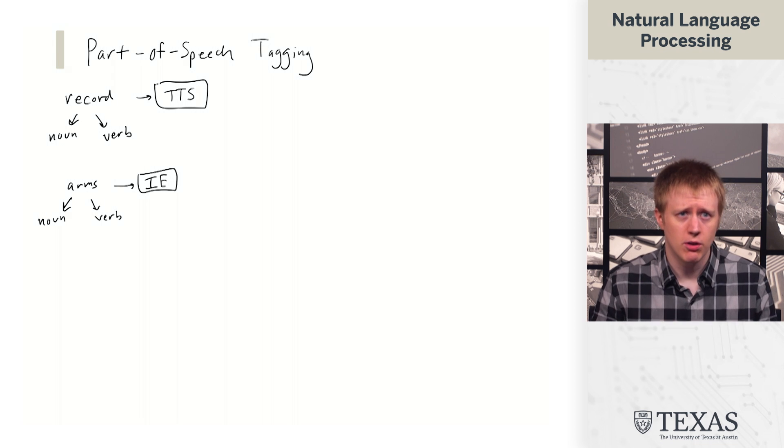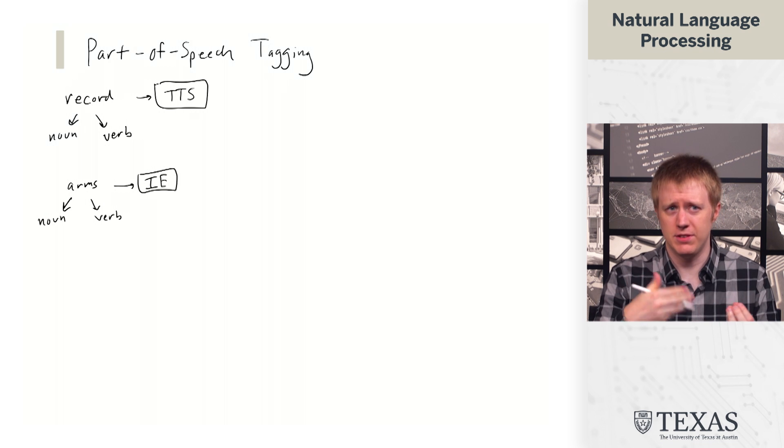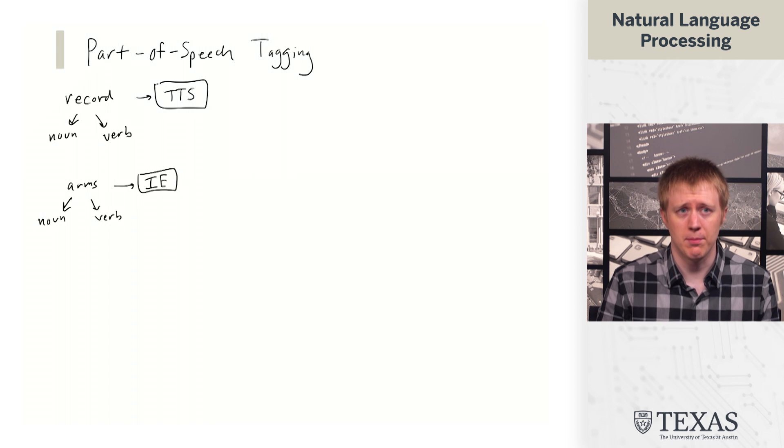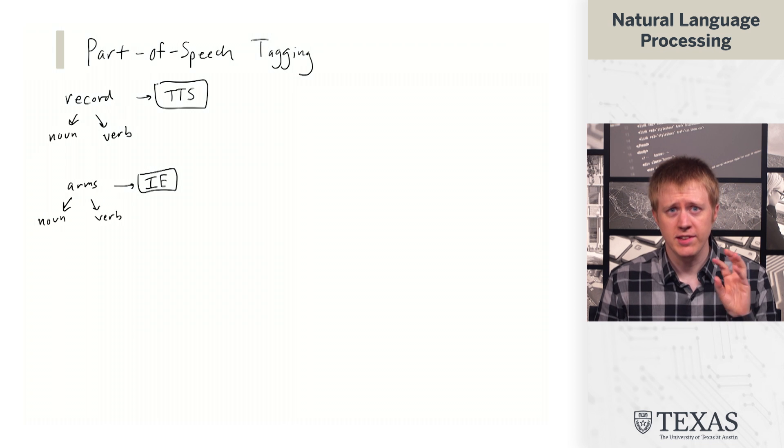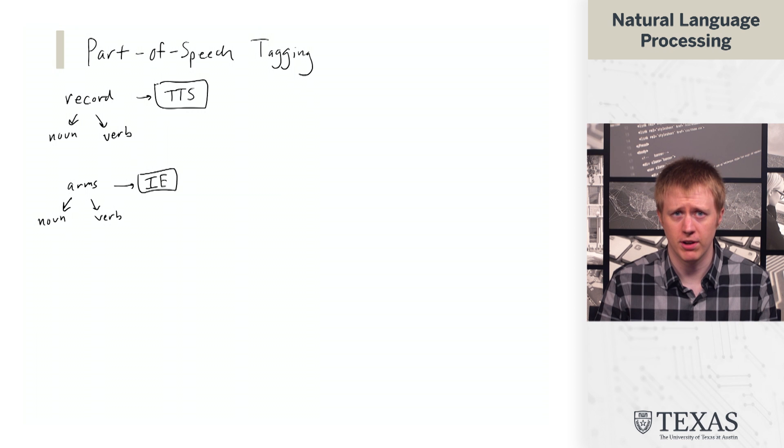Obviously there are deeper questions that we want to be able to answer here. For example, if we do have a noun form of arms, what kind of arms are we talking about? But this is a first step towards at least getting some idea as to what's going on deeper than the surface structure, deeper than just the sequence of characters associated with each of these words.